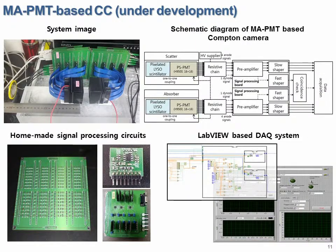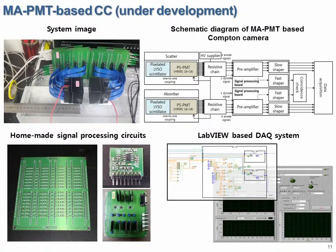Next is a small Compton camera based on a MAPMT, currently in the stage of completion. We used a homemade charge division circuit, amplifier, and signal processing board for the signal processing system of the imaging device. We also built a coincidence-based DAQ system based on a LabVIEW program.